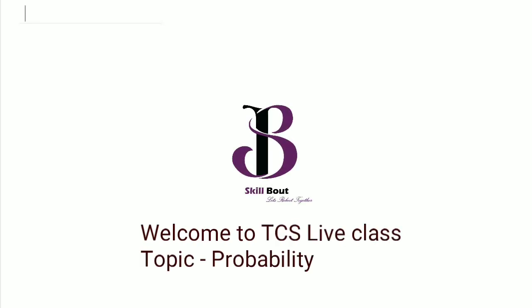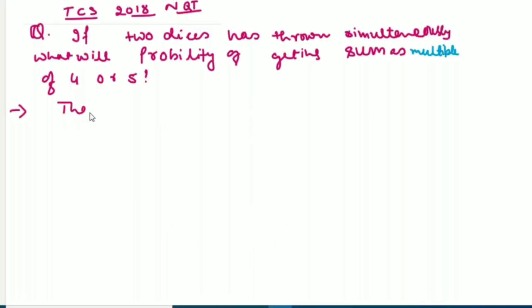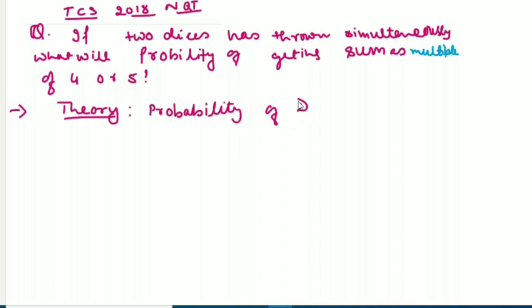I'll take you through one question which I have seen in the 2018 paper, and today's discussion will be based upon that only. I'll get into the theory first, then we'll solve the problem. While doing theory, I want you to make a note in your book saying: probability of dices. This entire topic is about how to find the probability of dices.